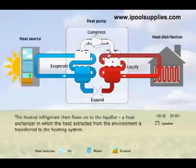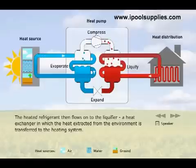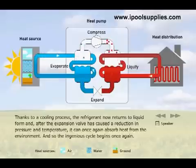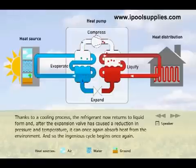The heated refrigerant then flows on to the liquifier, a heat exchanger in which the heat extracted from the environment is transferred to the heating system. Thanks to a cooling process, the refrigerant now returns to liquid form and, after the expansion valve has caused a reduction in pressure and temperature, it can once again absorb heat from the environment. And so, the ingenious cycle begins once again.